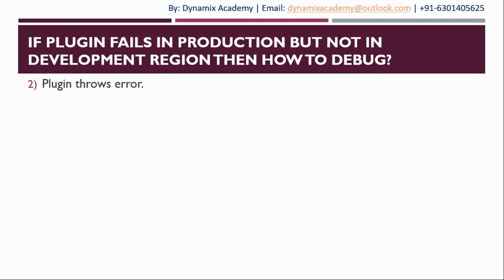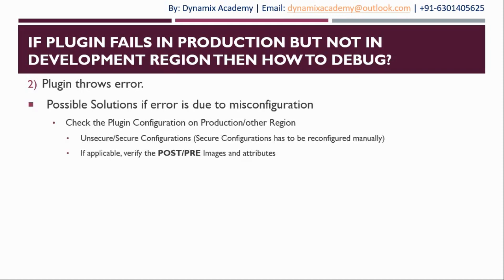Now let us see possible solutions when the plugin is throwing an error only on production but not on development. First, observe the error — sometimes the error itself will tell you what required configurations are missing. Make sure all secure and unsecured configurations are present on the production environment. If you are moving a solution from dev to production and your code uses secure configurations, by default those secure configurations will not move when importing the solution — you have to reconfigure them manually. If you are using post or pre-images configured manually on production, make sure all required entity images are present with the correct name and all required attributes are created.